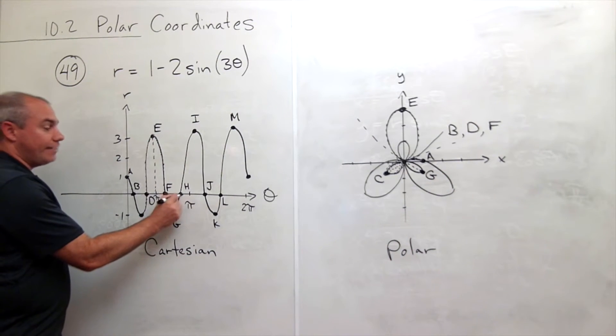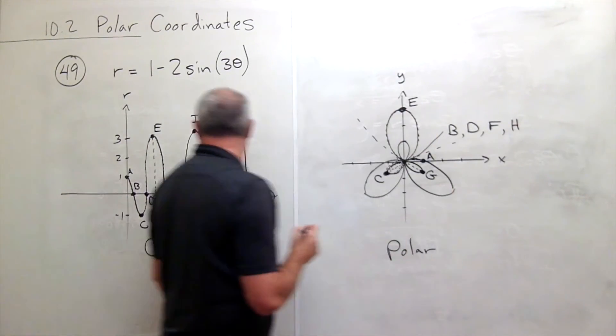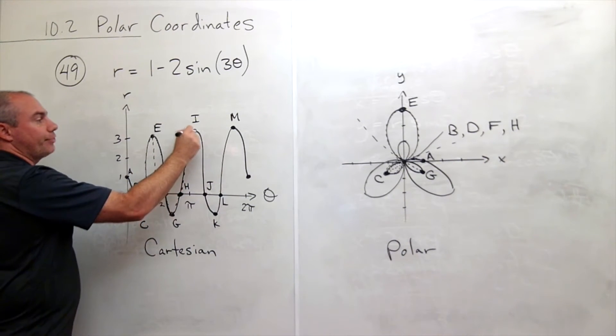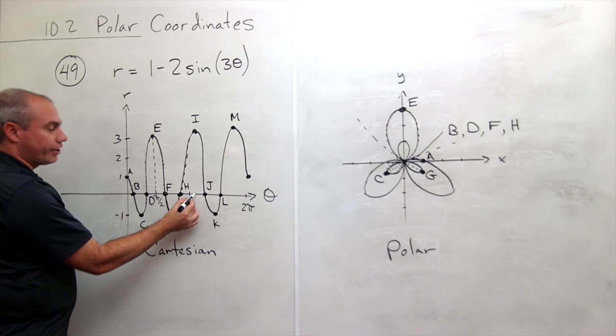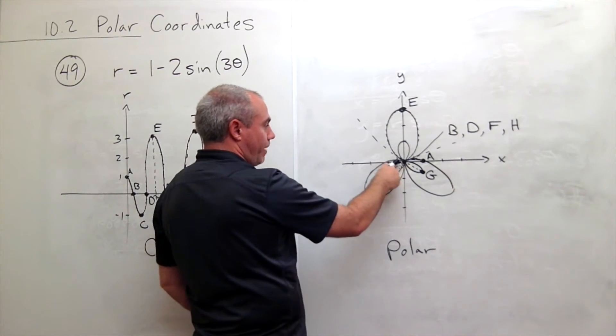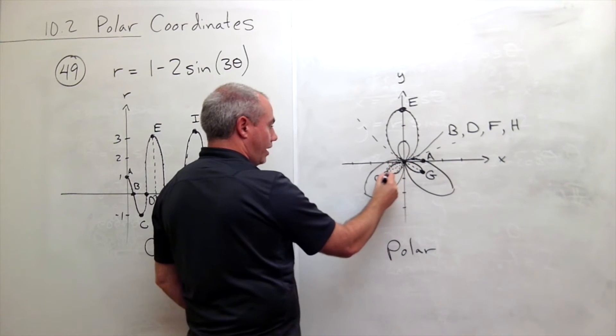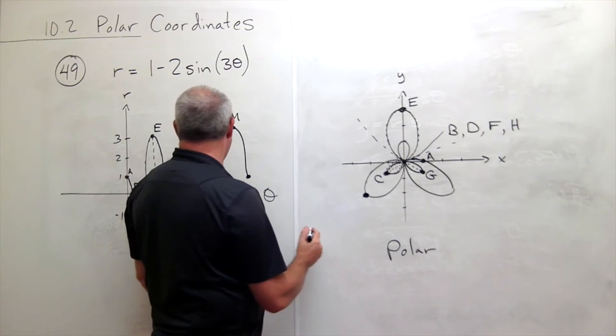Then I go to h. h, again, r is 0, so it's the center point. So this is h. Go to i, and I'm back at 3 again. But now I'm just slightly bigger than pi. So at an angle slightly bigger than pi, I go out 1, 2, 3, and I get my point i.